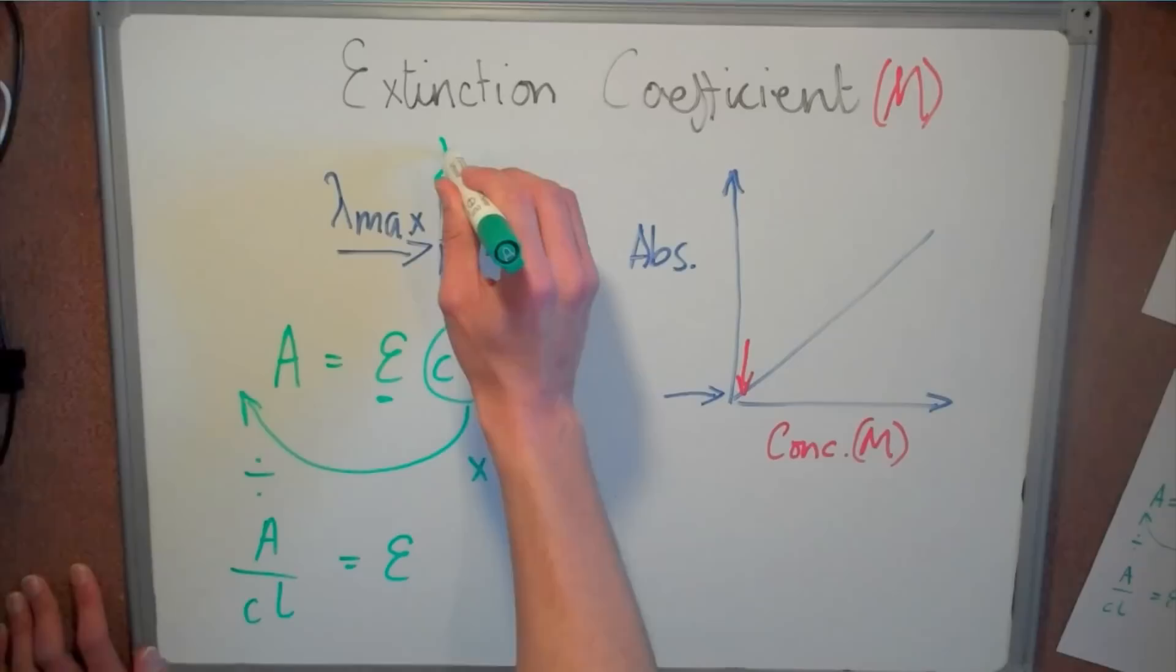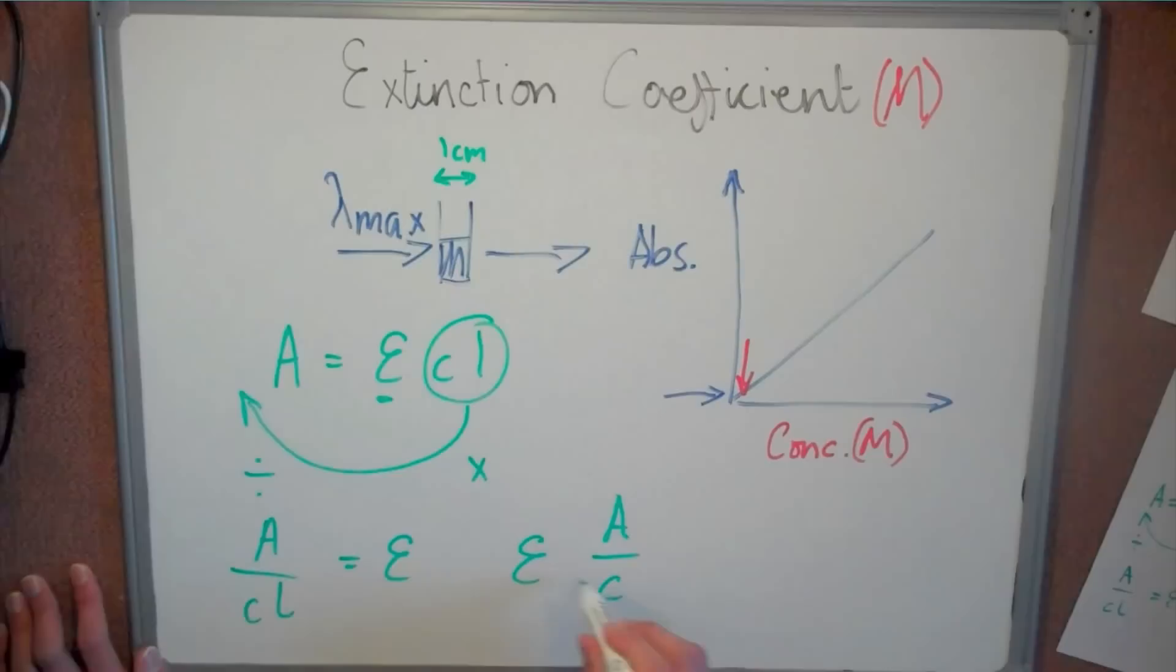Now we can plug in any corresponding values from the graph into our new equation to find the molar extinction coefficient at lambda max.